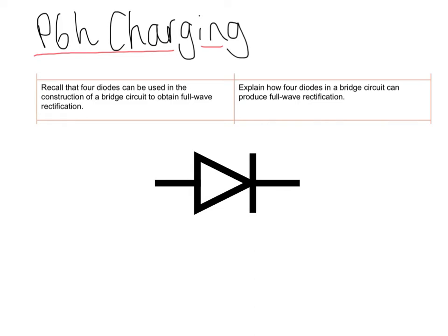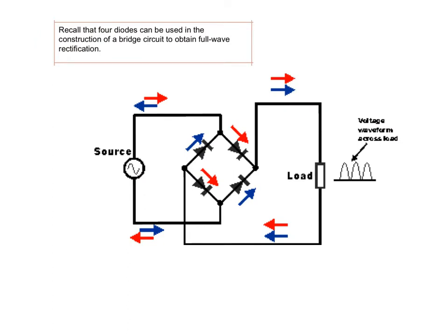In this short video, we want to look at how diodes can be used to convert AC current into DC current. Let's have a look at what the specification says. It says: recall that four diodes can be used in the construction of a bridge to obtain full wave rectification.